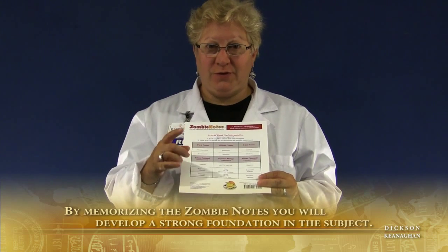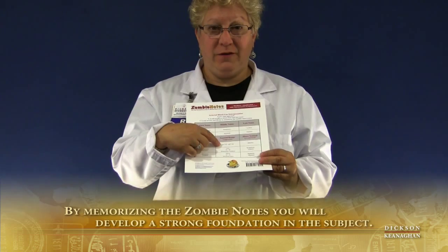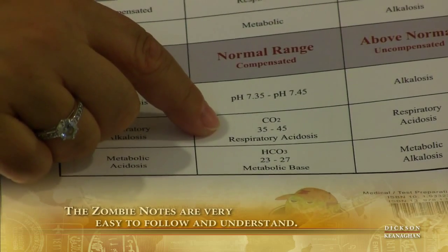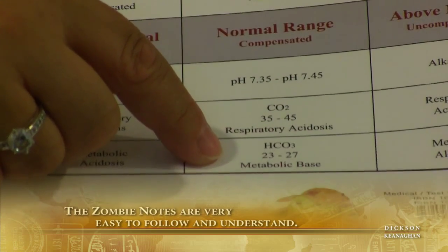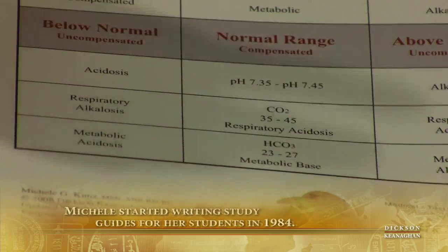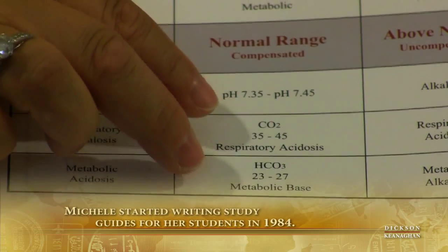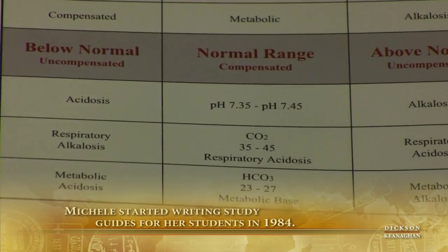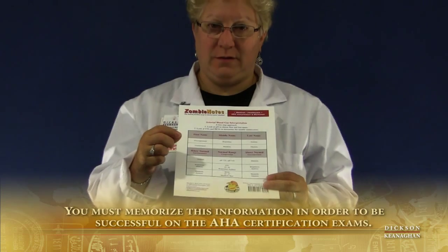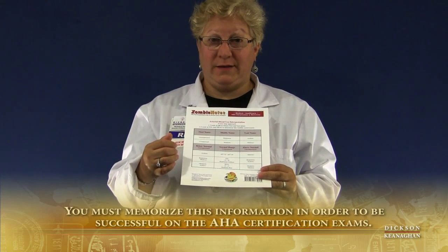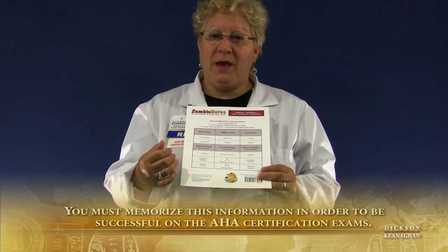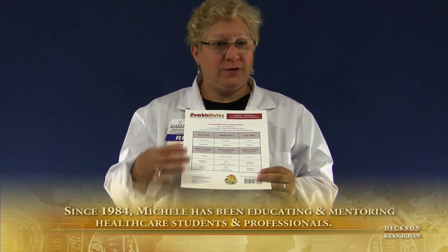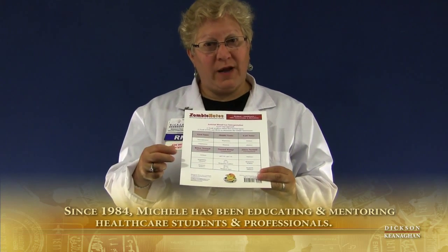So reviewing the norms one more time: normal pH is 7.35 to 7.45; normal respiratory acid CO2 is 35 to 45; and the bicarb, or base, is 23 to 27. The lungs and kidneys will do everything in their power, work very hard, towards getting a normal pH. So whenever we look at an arterial blood gas, we focus on the pH first. We'll name the pH — whether it's acidemia or alkalemia — and then we'll be detectives finding out who caused the problem or who's trying to fix it.